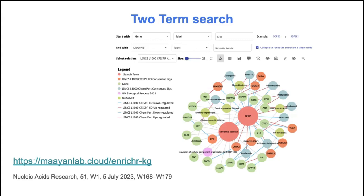Here is the two-term search. What it does is look at the shortest paths between two terms. In this example, I looked at vascular dementia and GFAP, and here are the shared terms — the shortest paths between them. We can see terms like memory impairment, which are actually related to both dementia and GFAP. If you have two genes or two terms, you can see overlapping genes or overlapping terms between them, which can also prove useful for your analysis.